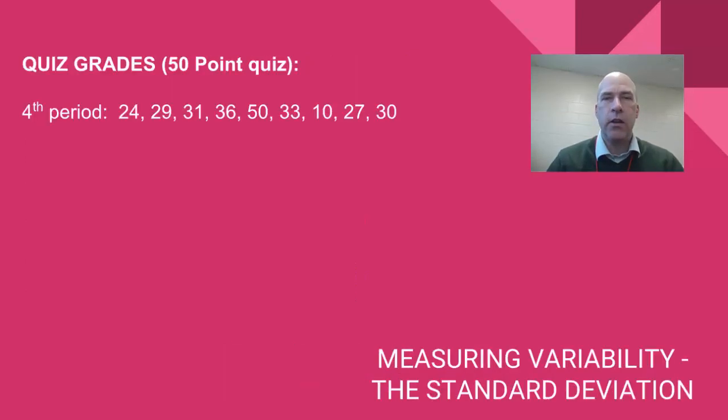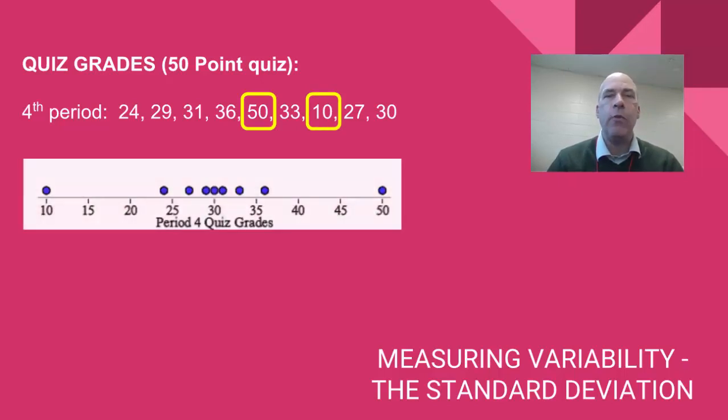To start we have some test scores here. You can see that's a 50 point quiz and some kids scored quite high. In fact I have one score that's a 50 and I have one score that was quite low and that's a 10. If you look at the rest of the scores they seem to be clustered pretty much around 30 and we can see that in the dot plot here as well.